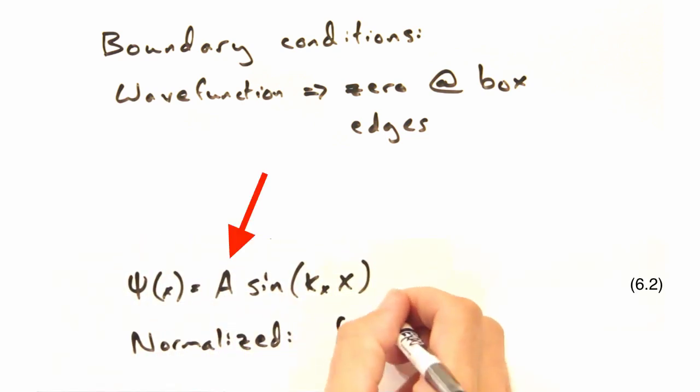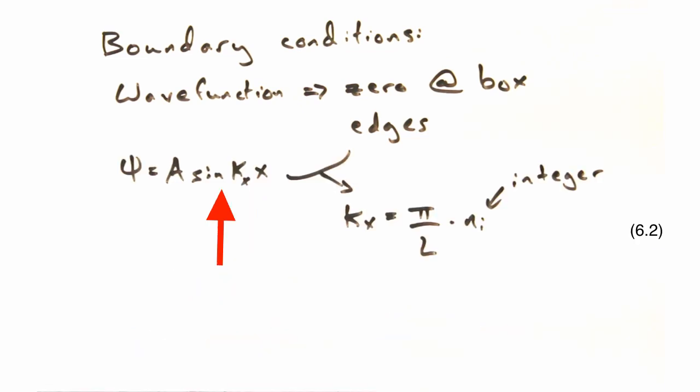This pre-factor comes from normalizing the integral of psi star psi to one. And because our wave function is made of sine waves, we can then put limitations on our k vectors that goes as pi over the length of our box times some integer ni. Now we have an expression for k, we should think about what values we can use for ni.